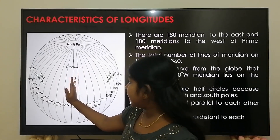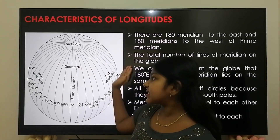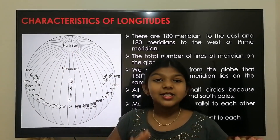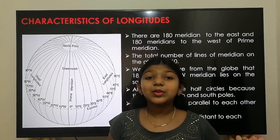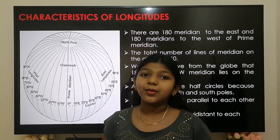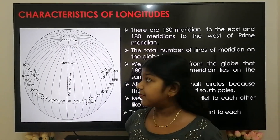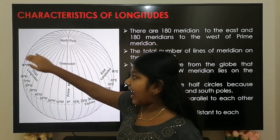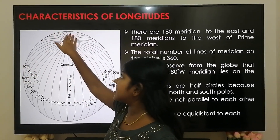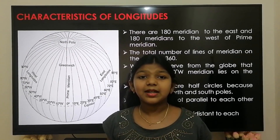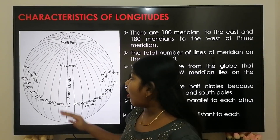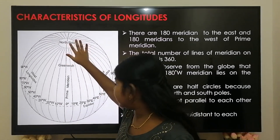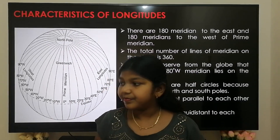There are 180 meridians to the east and 180 meridians to the west of the prime meridian, making a total of 360 meridians on the globe. We can observe from the globe that the 180 degree east and the 180 degree west meridian lie on the same line. All meridians are half-circles as they join the north pole and the south pole.